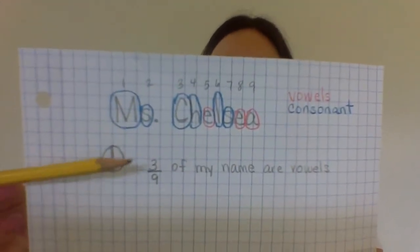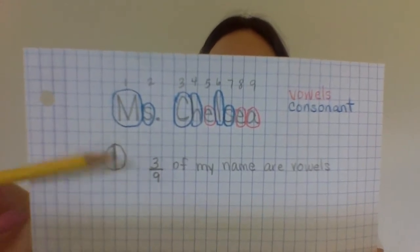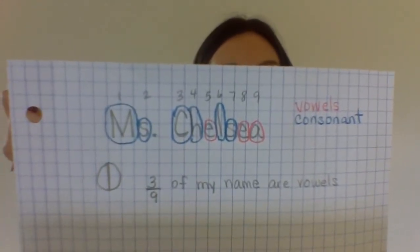Now, let's see how many equal parts are vowels. Count up the number of vowels in your name. That number will be the numerator. I have three vowels in my name, so I can say that three-ninths of my name are vowels.